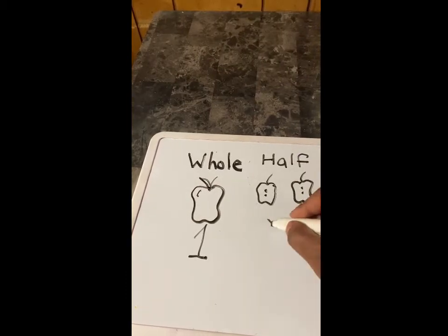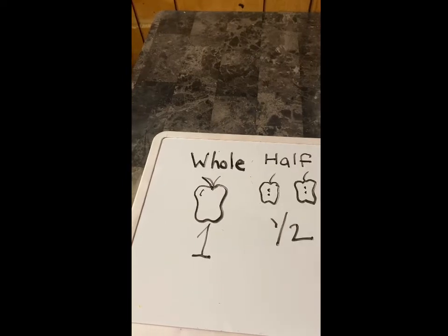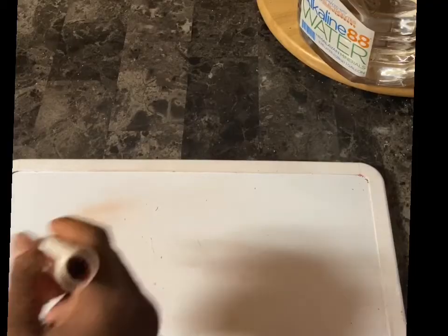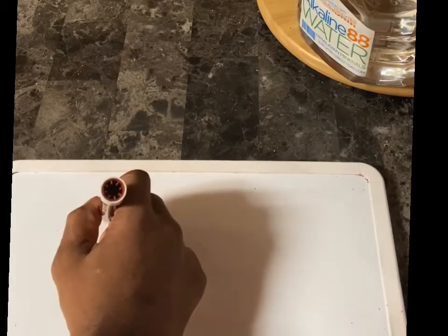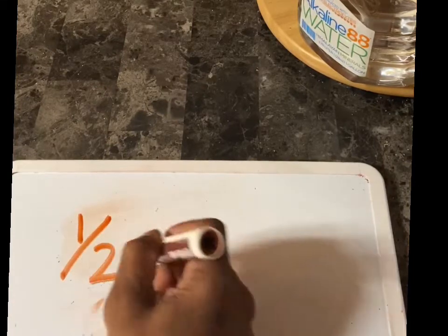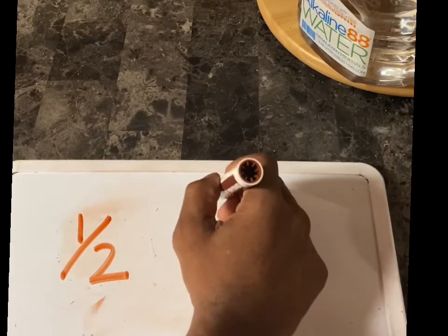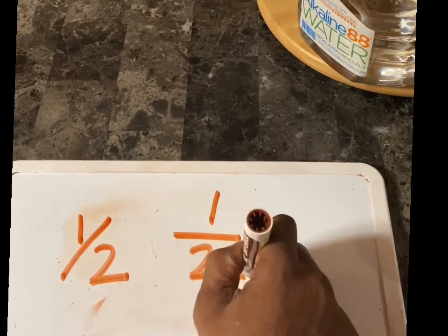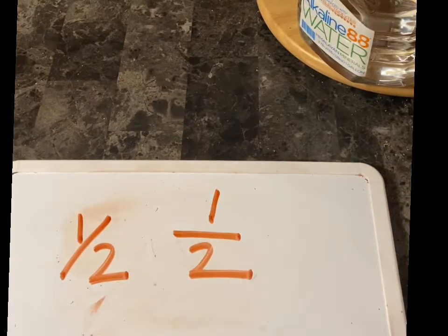One half — that's how you write one half. If I take one part of that apple, that's one half of the apple. A way to write one half is: a one, a slanted line, and a two. Another way is: a one, a line going across, and a two. Those are two different ways to write one half.